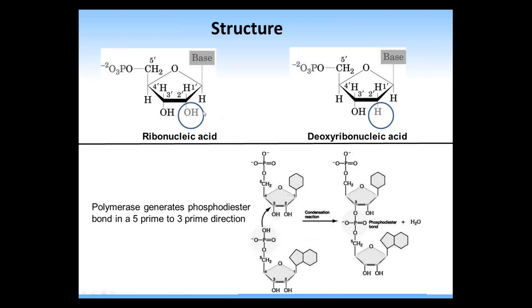Ribonucleic acid forms the basis for both RNA and DNA. The difference is that RNA has a hydroxy group on the second carbon, whereas DNA, or deoxyribonucleic acid, has only a hydrogen group. The lack of this hydroxy group is thought to stabilize DNA and make it less susceptible to degradation. RNA is found in many molecules including messenger RNA, ribosomal RNA, transfer RNA, and also serves as energy currency in molecules such as AMP and ATP.